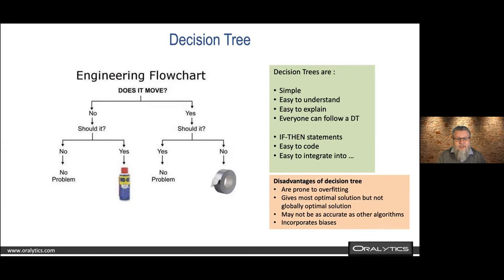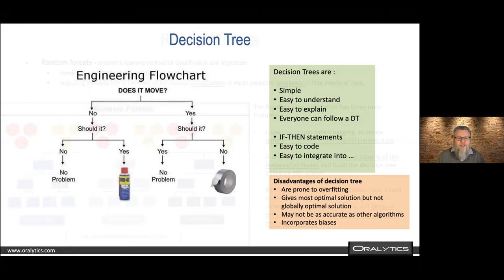Decision trees do have some disadvantages — they're not necessarily the most accurate algorithm, though they're extremely quick to produce. The mathematics uses the Gini index or information gain, which are simple calculations. However, they make certain assumptions about independent variables, so we need to work away from that.